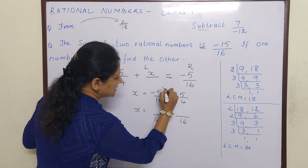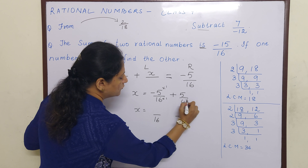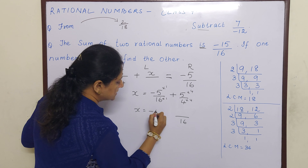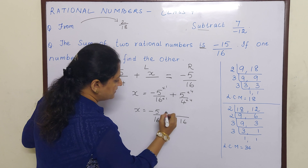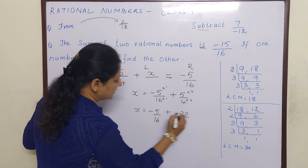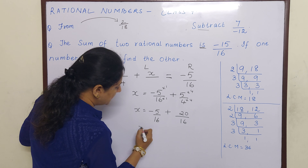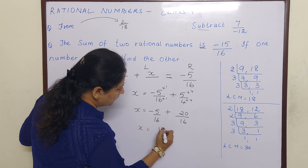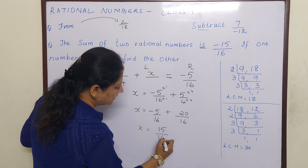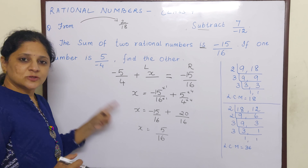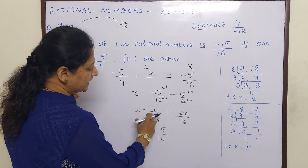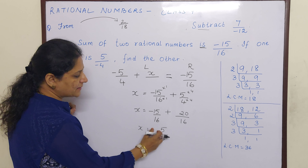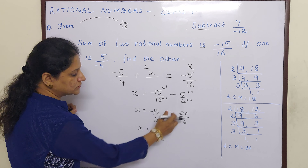So the sum of 4 by 9 and minus 6 by 18 is giving us the answer 2 by 18. So now read the question: from 2 by 18, subtract 7 by minus 12.